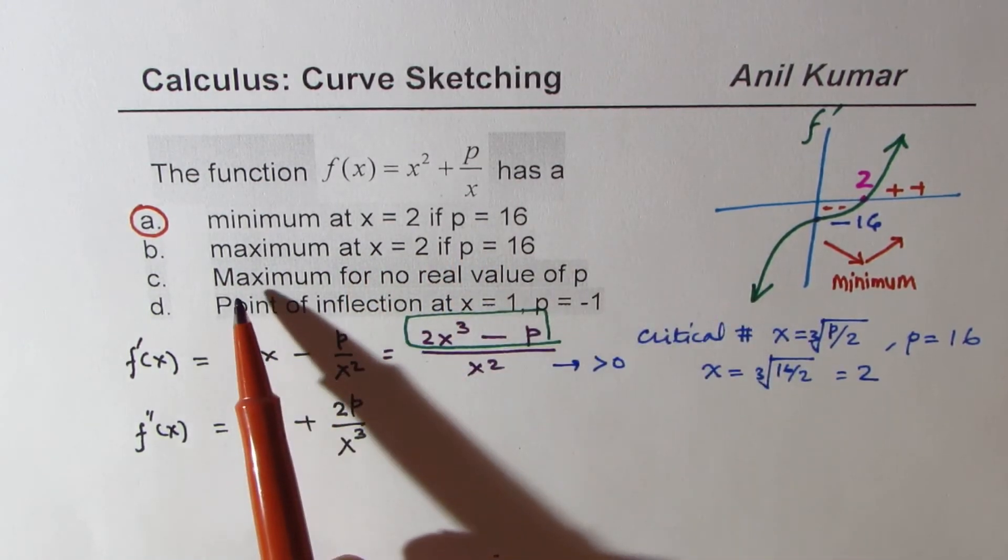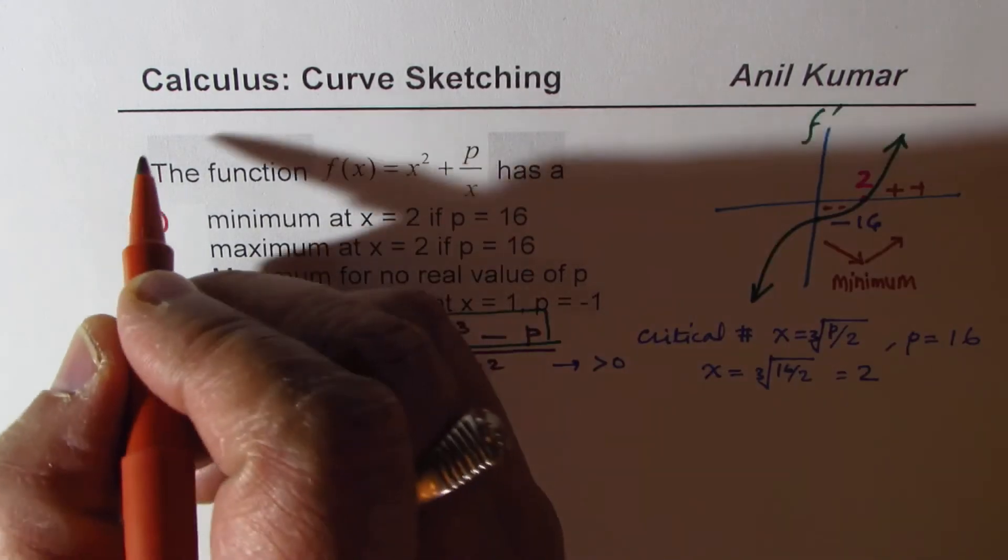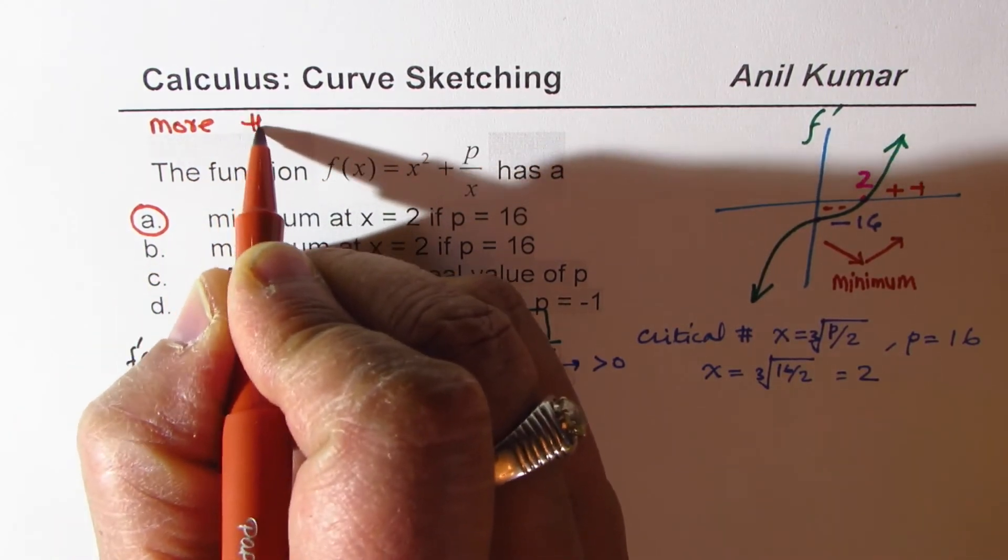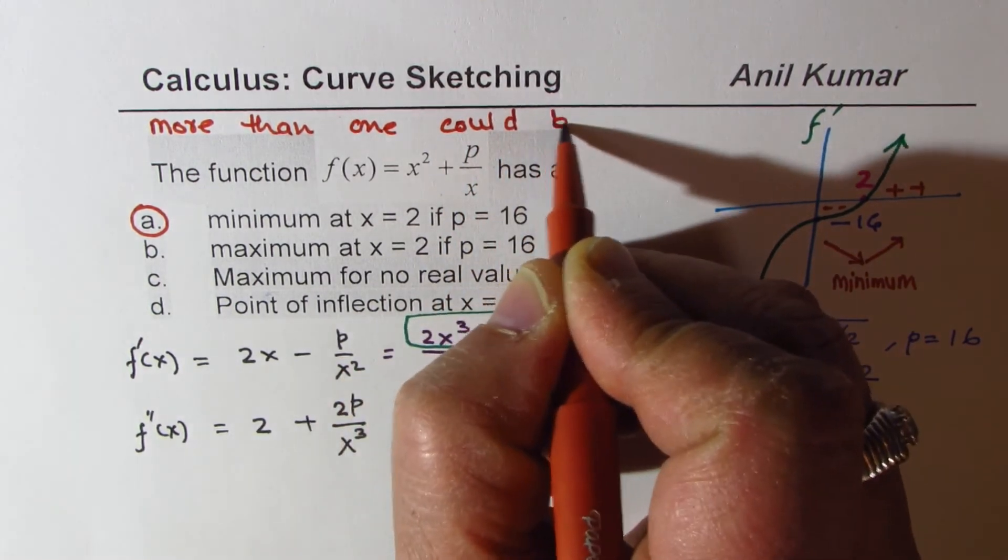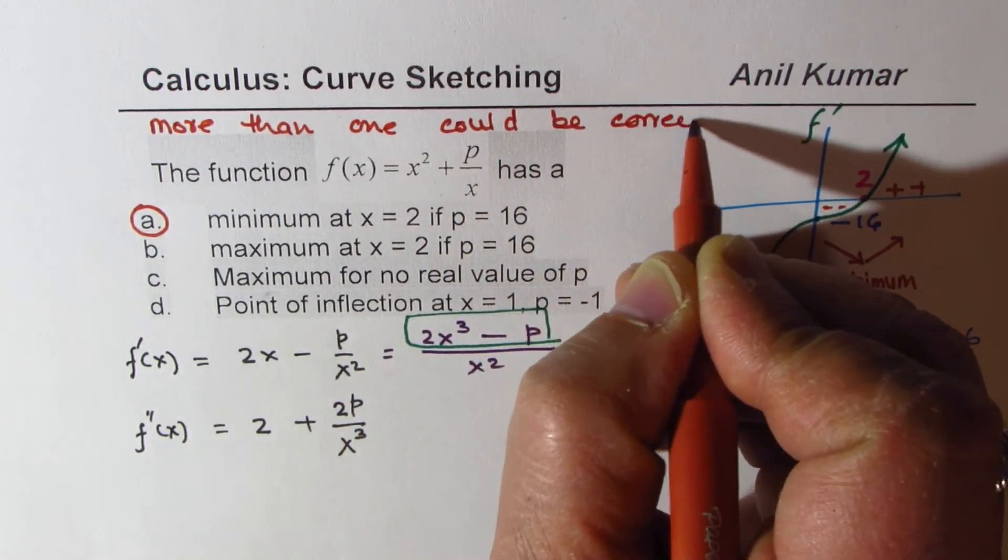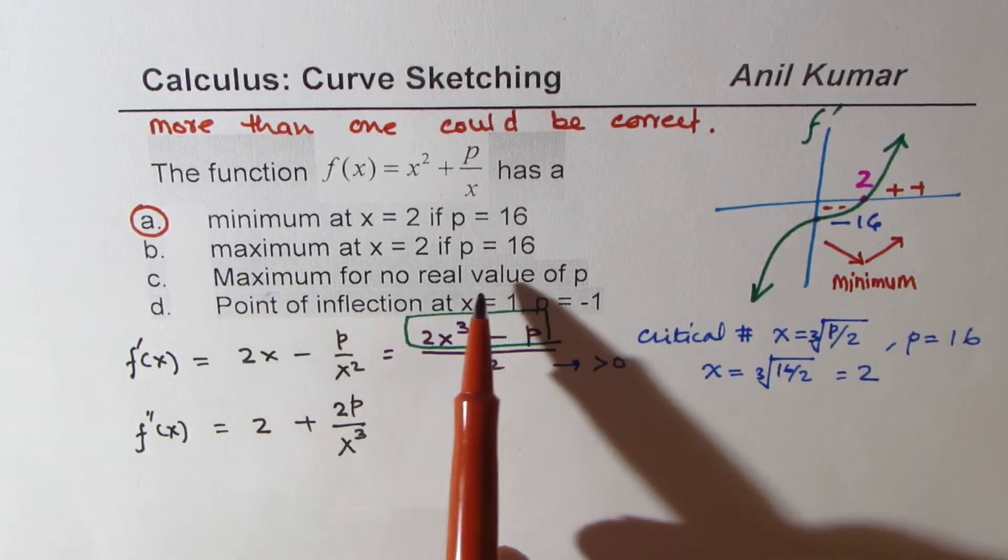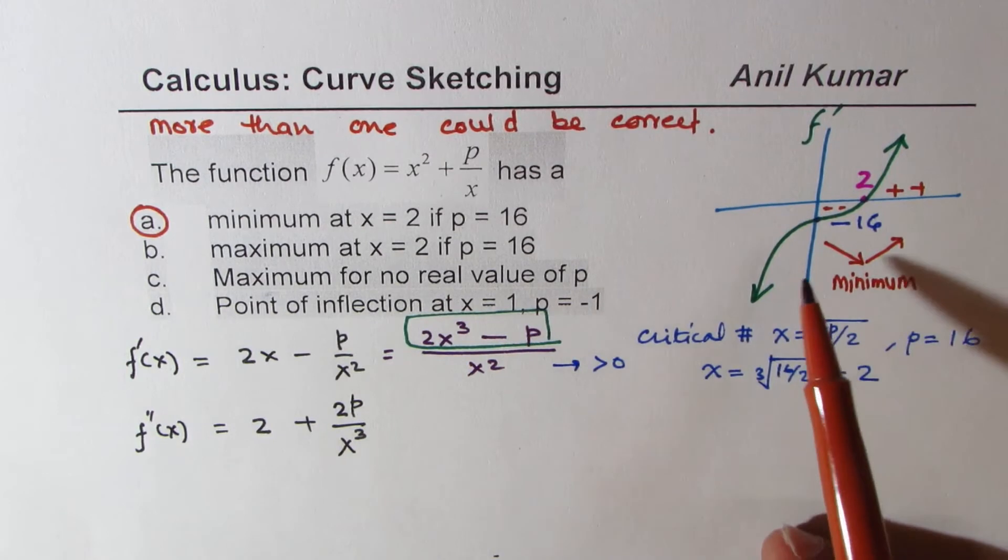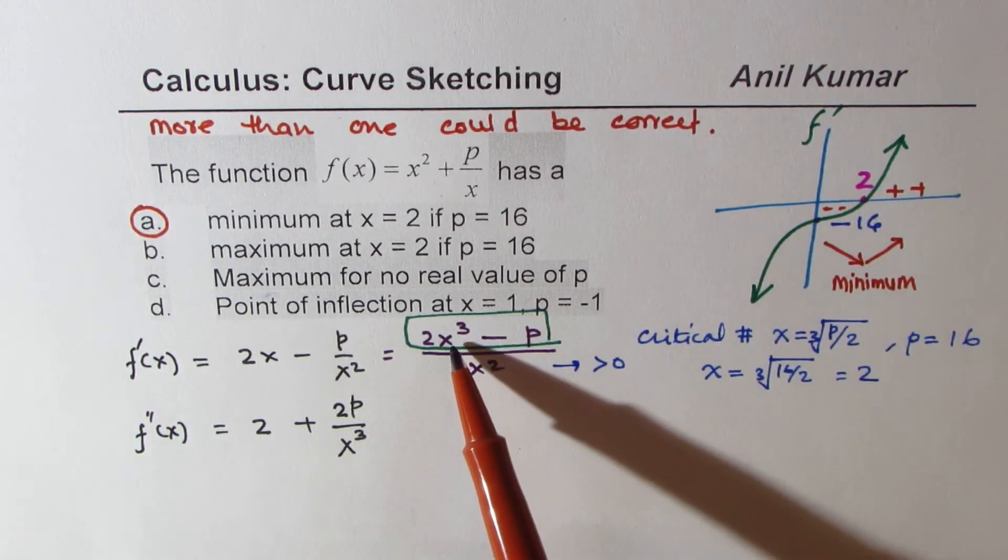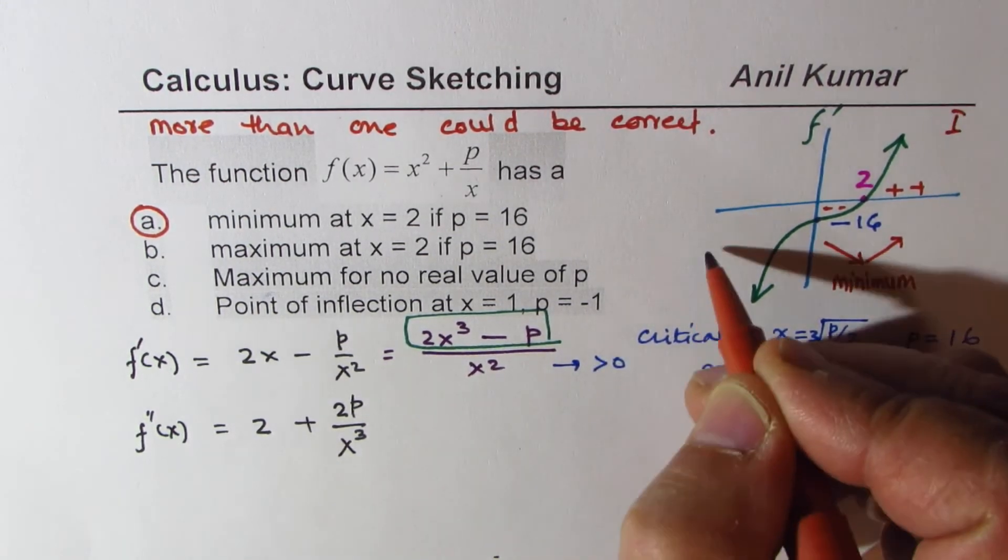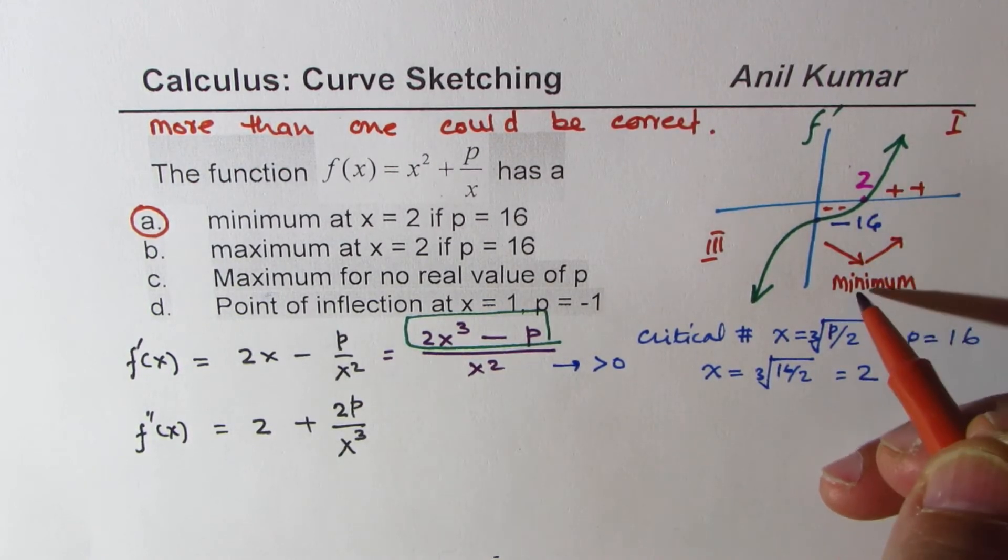Now, we can also analyze whether c is correct or not. Remember, in IIT test, more than one could be correct solution. Now, this is very important to understand. Now, maximum for no real value of p. Well, from here, you can see the graph is always heading towards quadrant 1, correct? From quadrant 3. So it will always change from negative to positive. So we'll always have minimum.